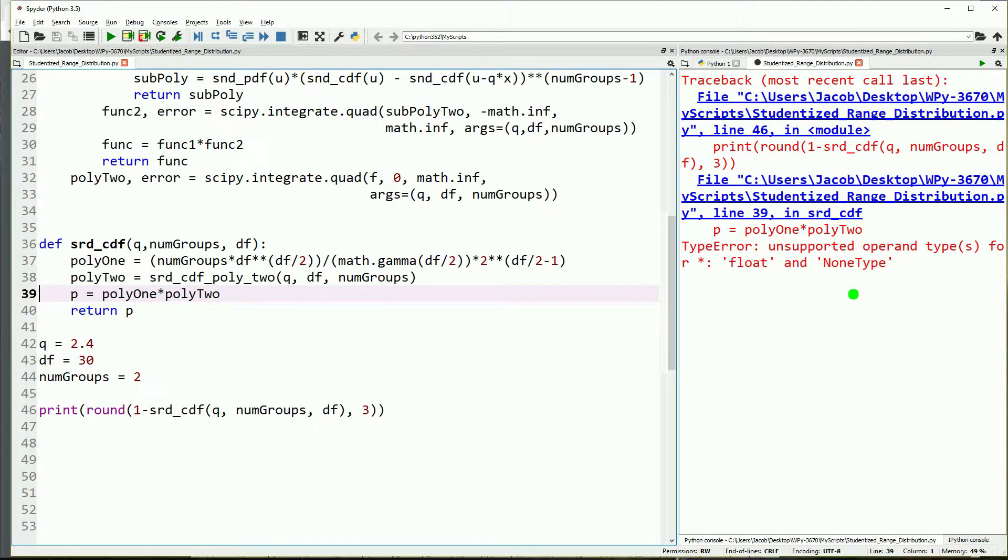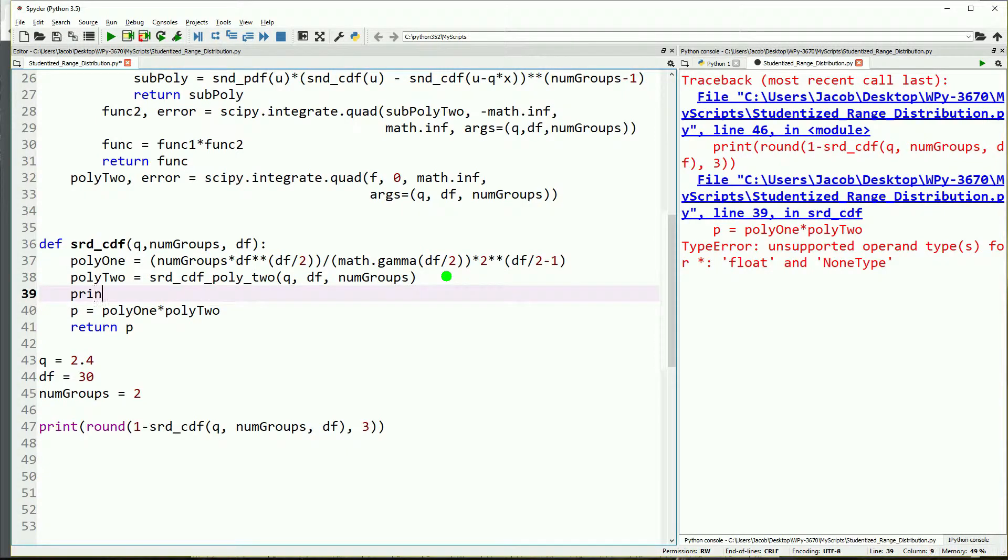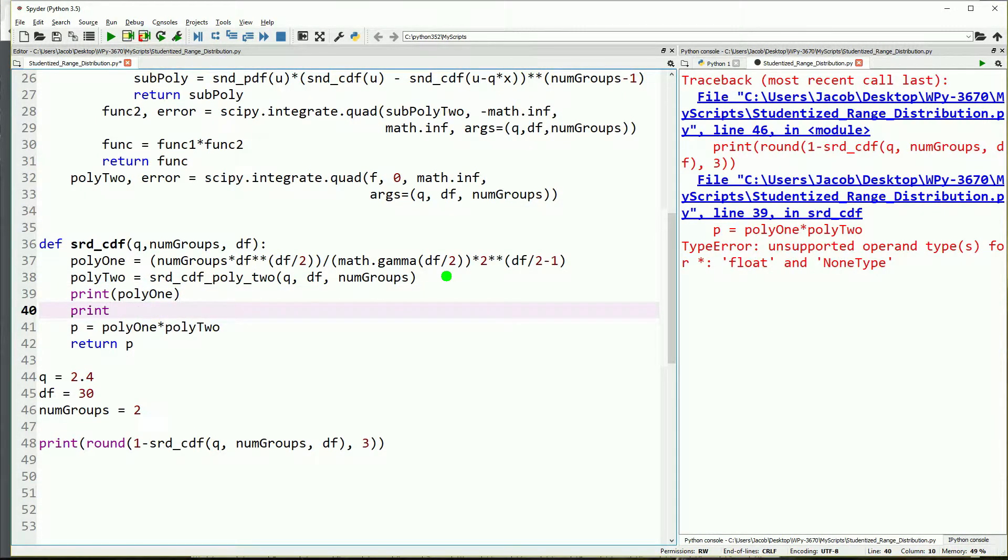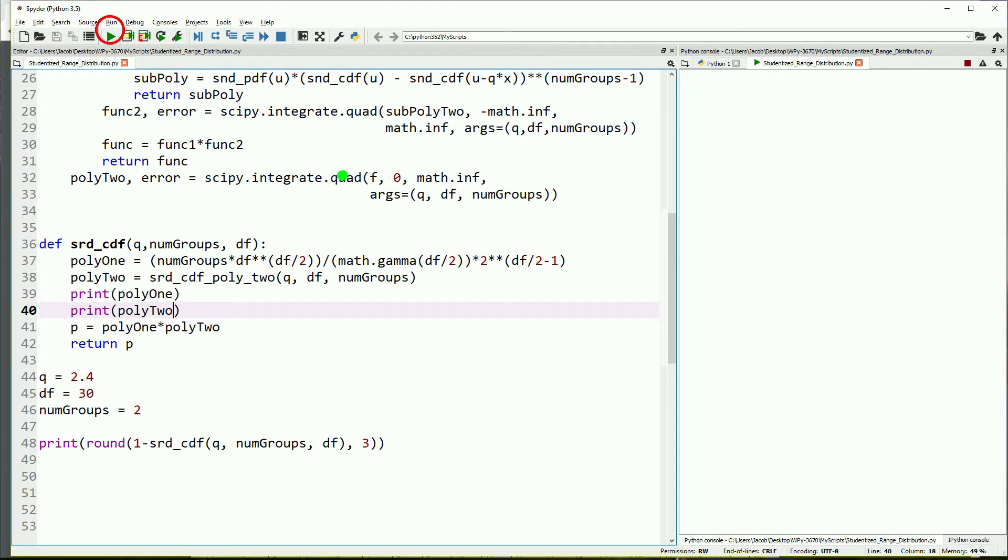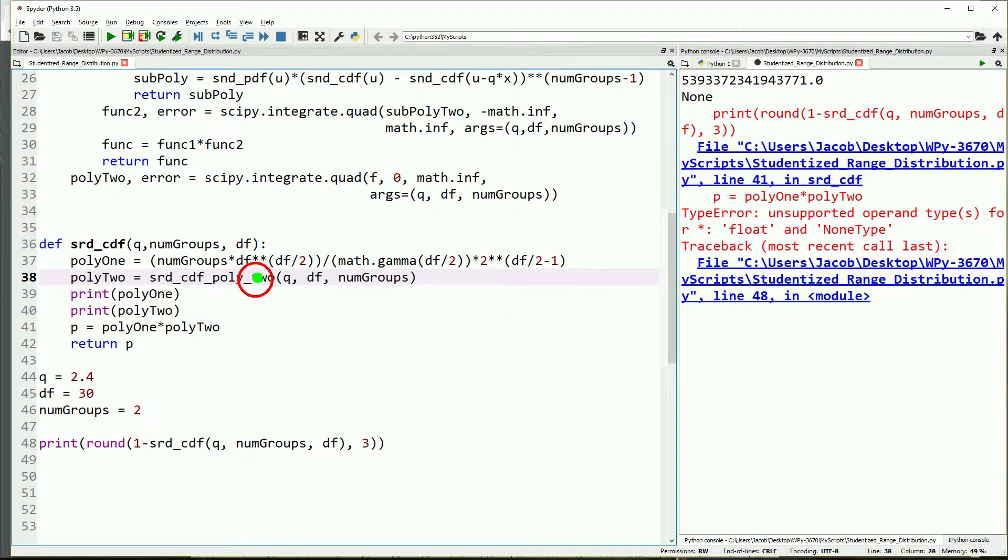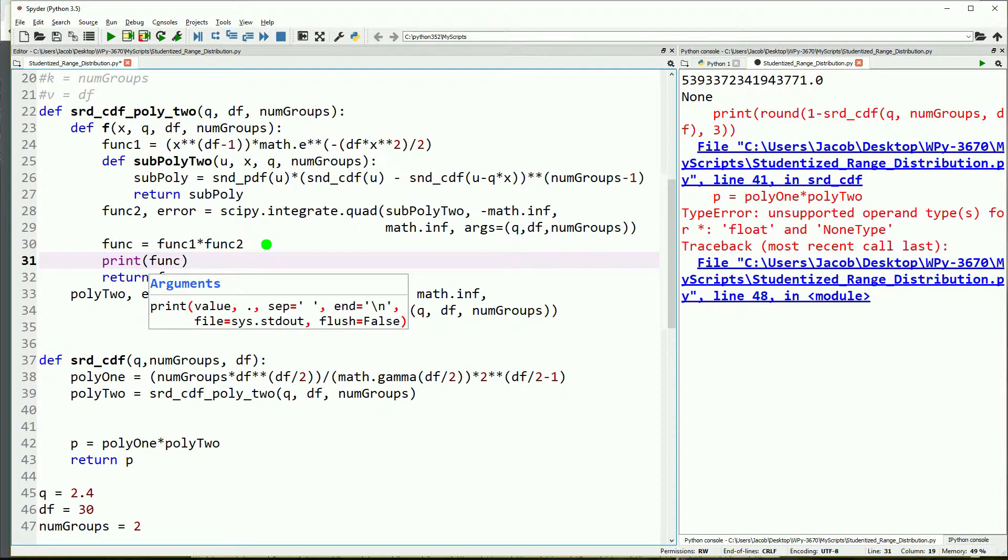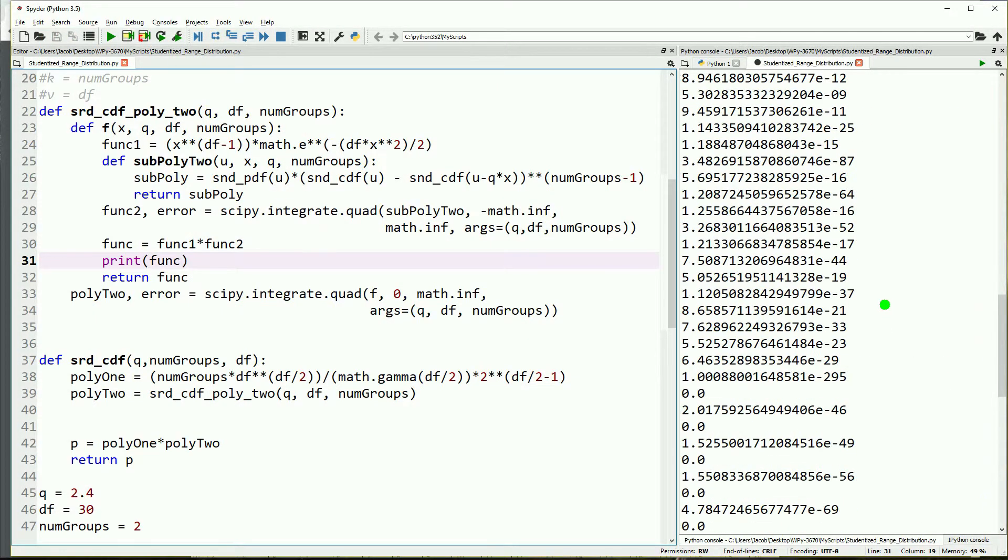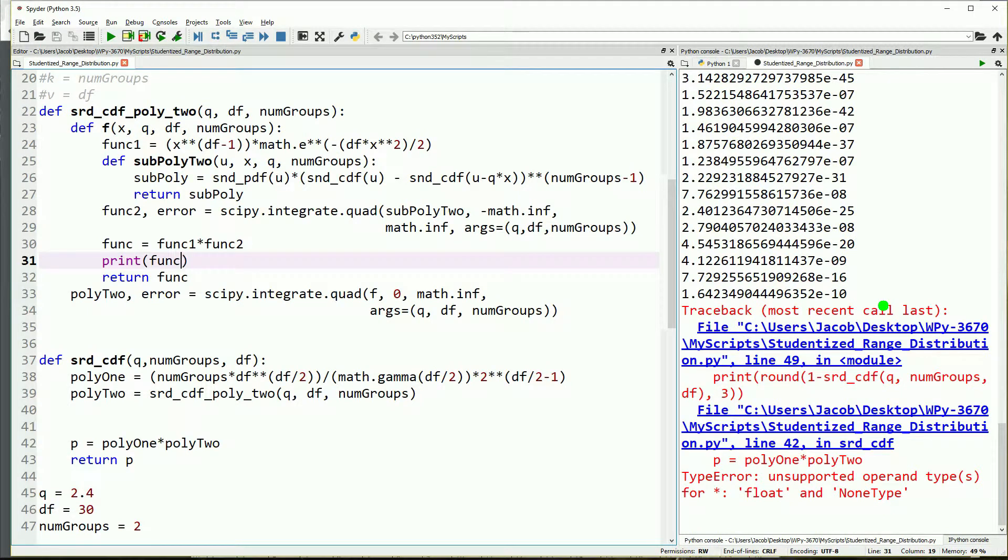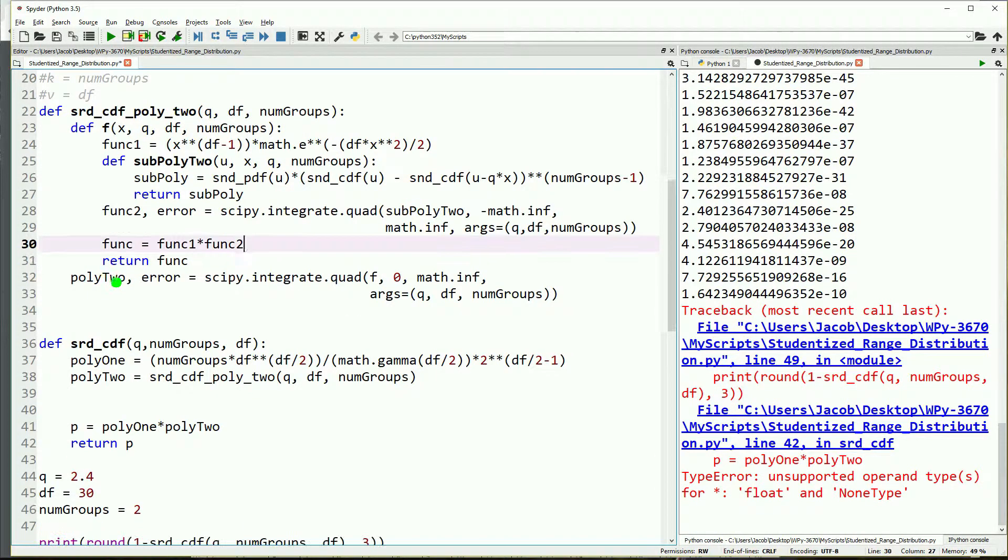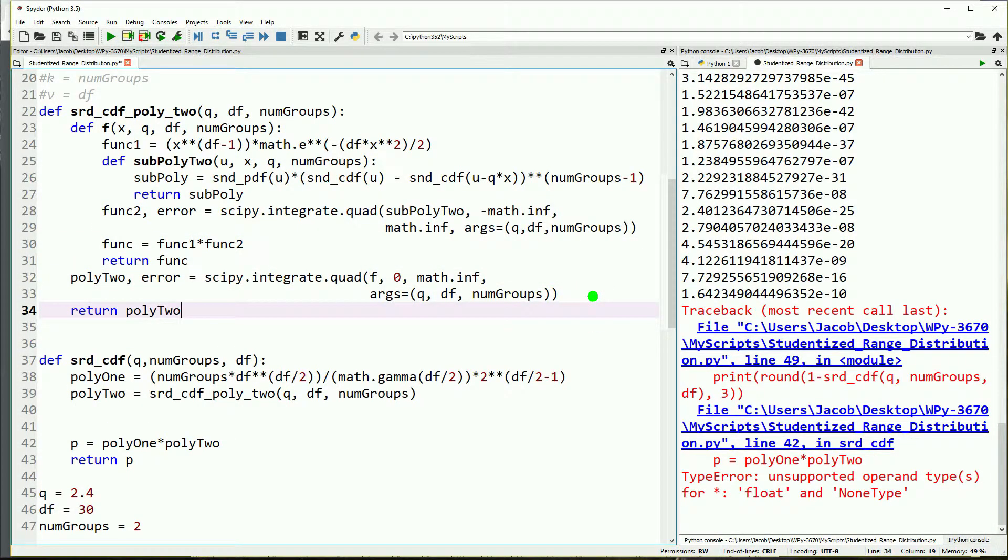I fixed that, hit run, and now we have another error. Type error unsupported operand. So that means that one of either poly one or poly two, probably poly two, is giving us - we're going to print off each. So poly two is giving us a none. So now I need to go back and see why it's returning none. Looking at it, I appear to have actually just forgotten to include the return statement for poly two and we get a value. The value makes absolutely no sense, so now you have to go through and figure out why that is not returning what we expect.